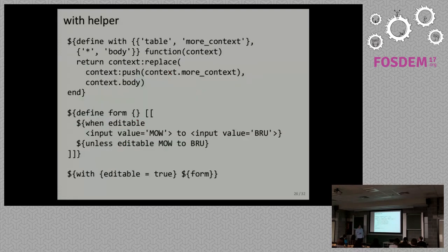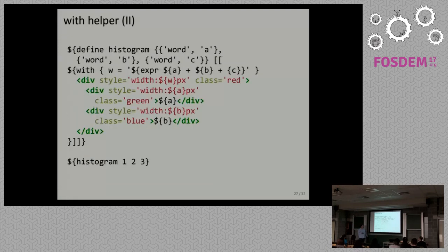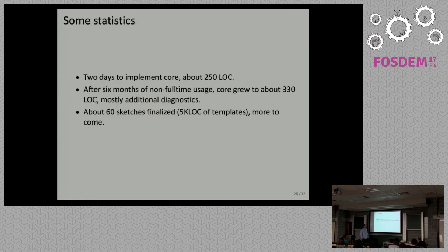So everything related to the same set of data is kept together. Another use for the VIV helper is to define extra context, like constants, to be used inside the template. Here I have a simple histogram drawing macro template, which just calculates the width of the histogram from its arguments. Some stats.